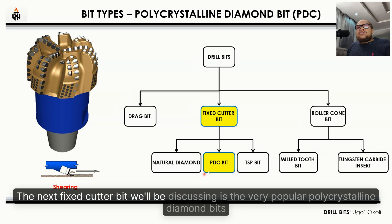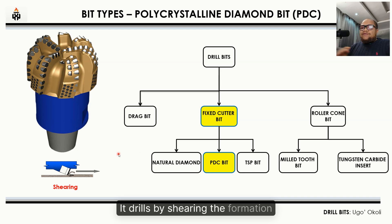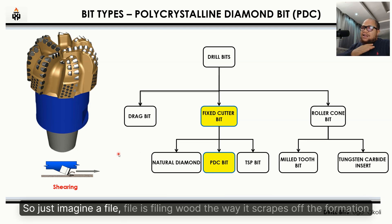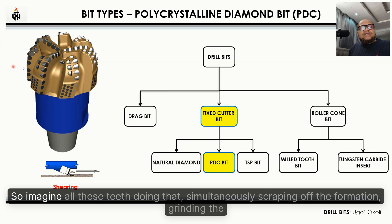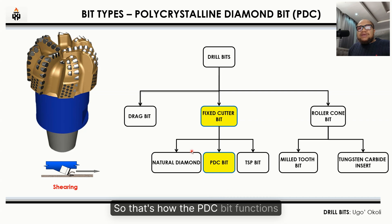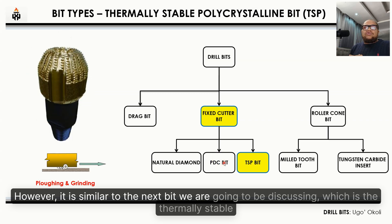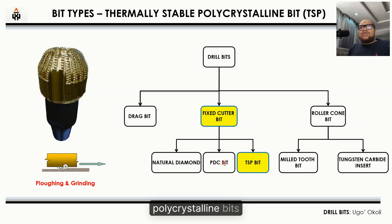The next fixed cutter bit is the very popular polycrystalline diamond compact (PDC) bit. It's very popular in the industry. It drills by shearing the formation — it scrapes, just imagine a file filing wood. All these teeth simultaneously scrape off the formation, grind the formation, and take the cuttings up to surface. That's how the PDC bit functions.